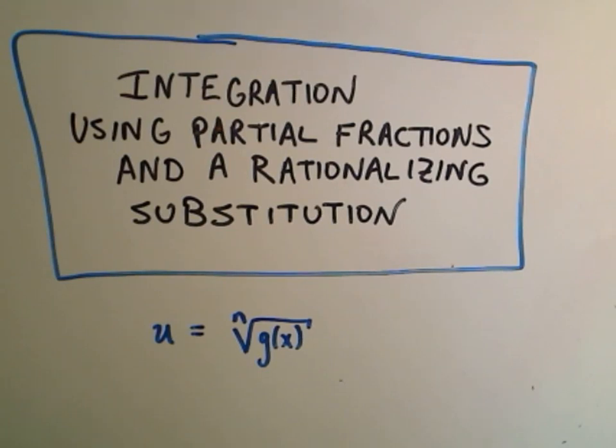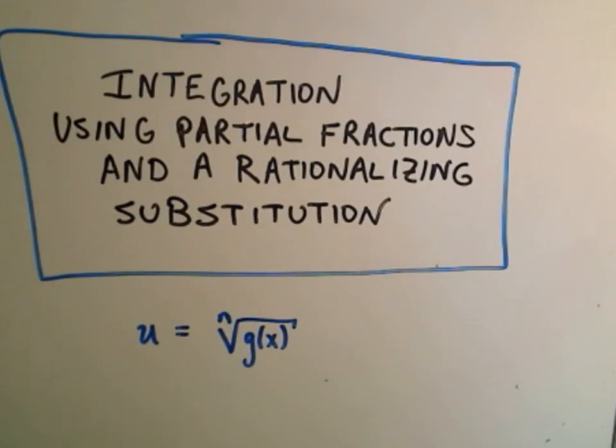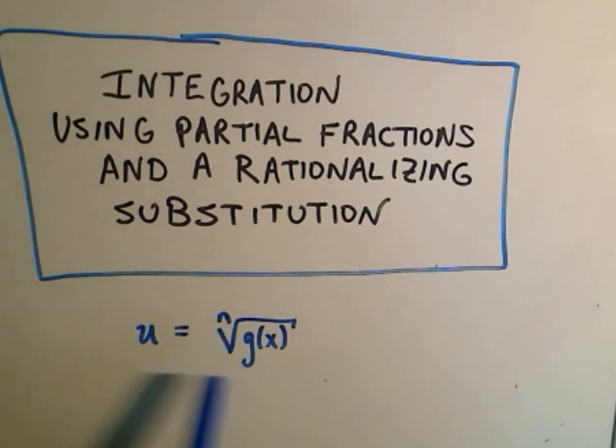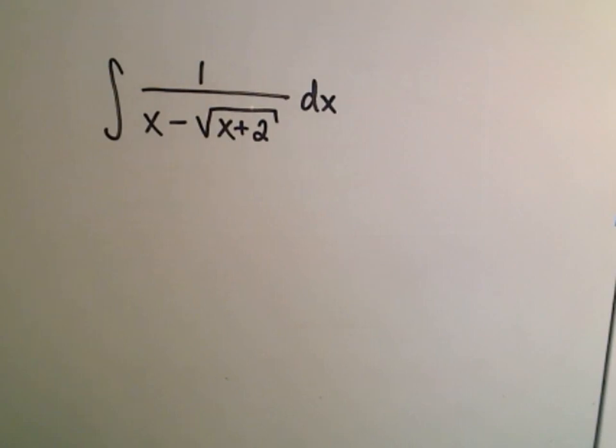Okay, in this video, I'm going to do an example of integration using partial fractions and what's called a rationalizing substitution. Basically, it says if you have kind of a random root floating around in there, a lot of times doing a substitution equal to that root will get rid of it and actually turn it into a partial fractions problem.